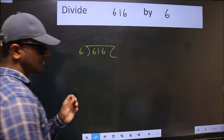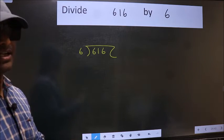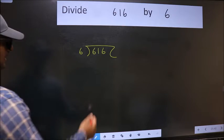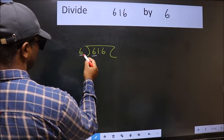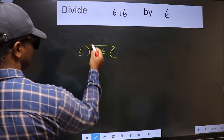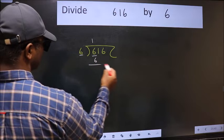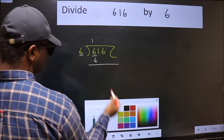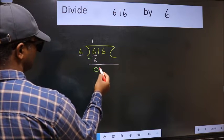This is your step 1. Next, here we have 6 and here also 6. When do we get 6 in the 6 table? 6 times 1. Now we should subtract. We get 0.